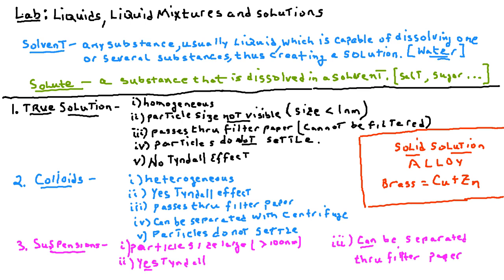These definitions have to do with the properties of the mixture, and a lot has to do with the size of the particles in the solute. A true solution is homogeneous — if you take a tablespoon of a true solution, you cannot tell it from any other tablespoon; everything looks identically the same. In a true solution, particle sizes are not visible, usually less than one nanometer, and true solutions are transparent and clear.